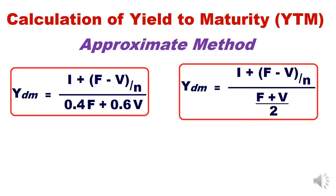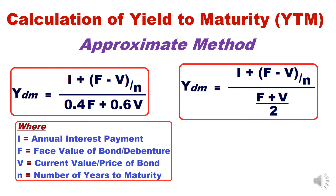The only difference between the two formulas is in the denominator: the first uses 0.4F + 0.6V, while the second uses an average — 0.5F + 0.5V. Either formula gives a slightly different but approximately the same answer. Here: I = annual interest payment, F = face value of the bond or debenture, V = current market price of the bond, and N = number of years to maturity.